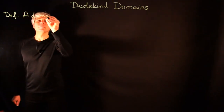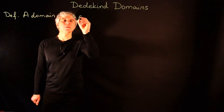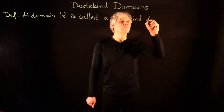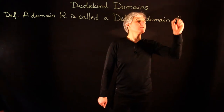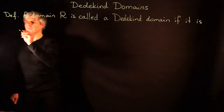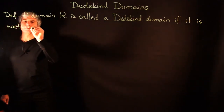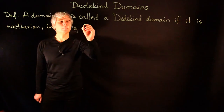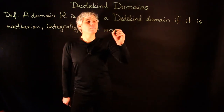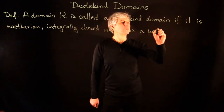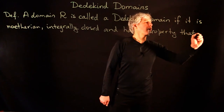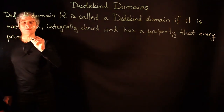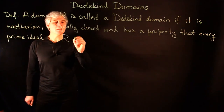A domain R is called a Dedekind Domain if it is Noetherian, integrally closed, and has the property that every prime ideal in R is maximal.